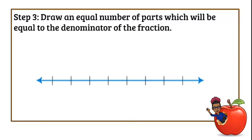Step 3: draw an equal number of parts which would be equal to the denominator of the fraction. Remember, our fraction 4 sevenths, so it would be 7 equal parts.